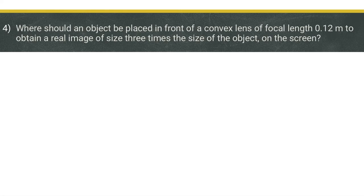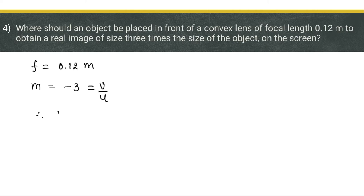Numerical number 4: where should an object be placed in front of a convex lens of focal length 0.12 meters to obtain a real image of size 3 times the size of the object on a screen? The focal length f = +0.12 meters since the lens is convex. The image is real and 3 times the size, so magnification = -3. From m = v/u, we get v = -3u.